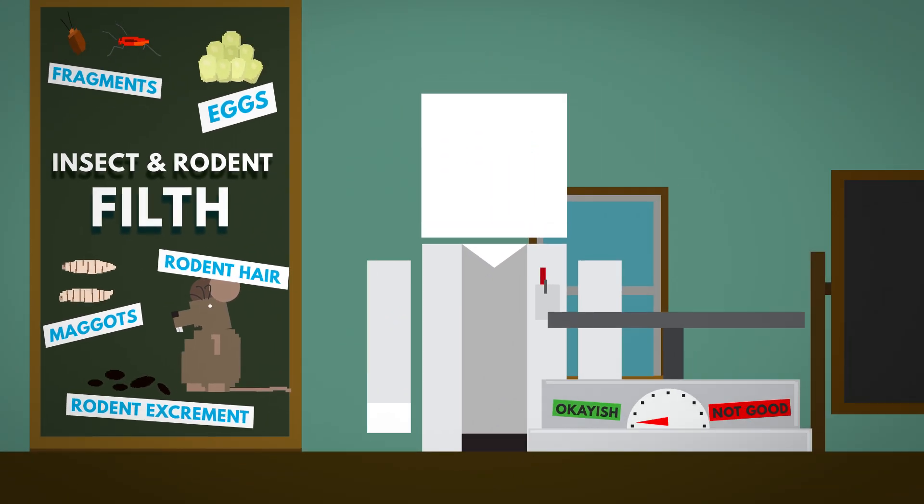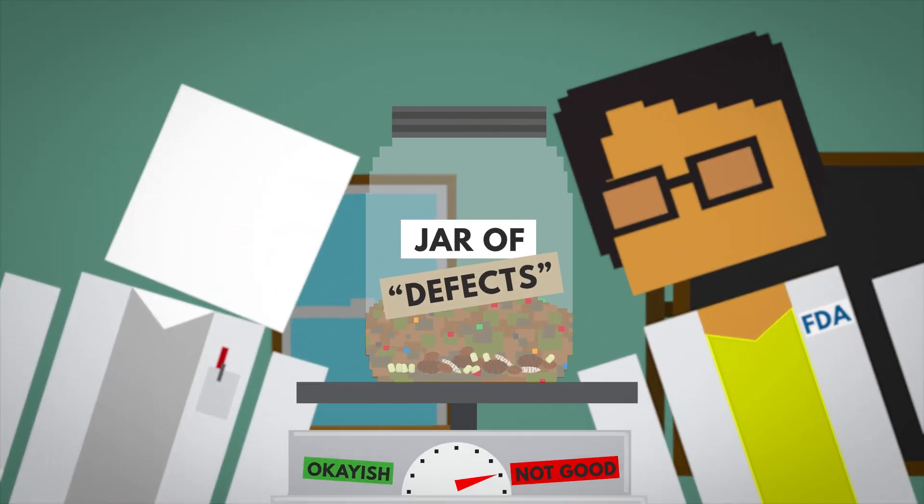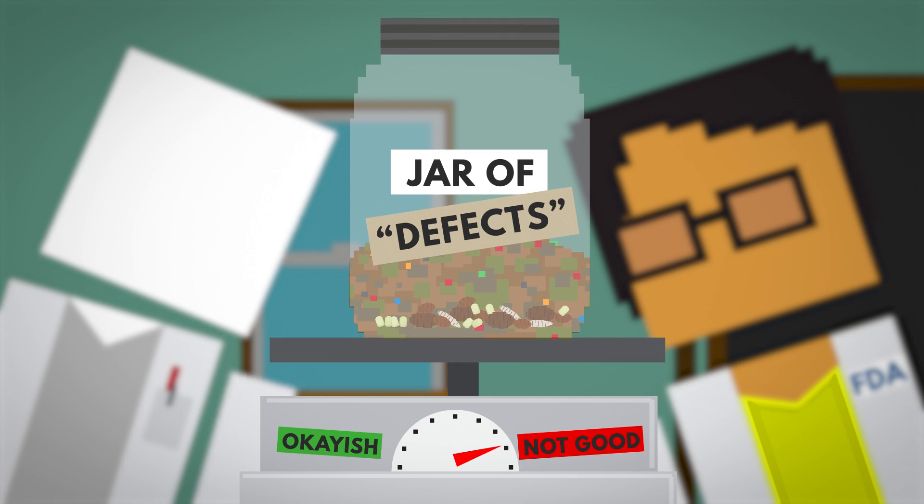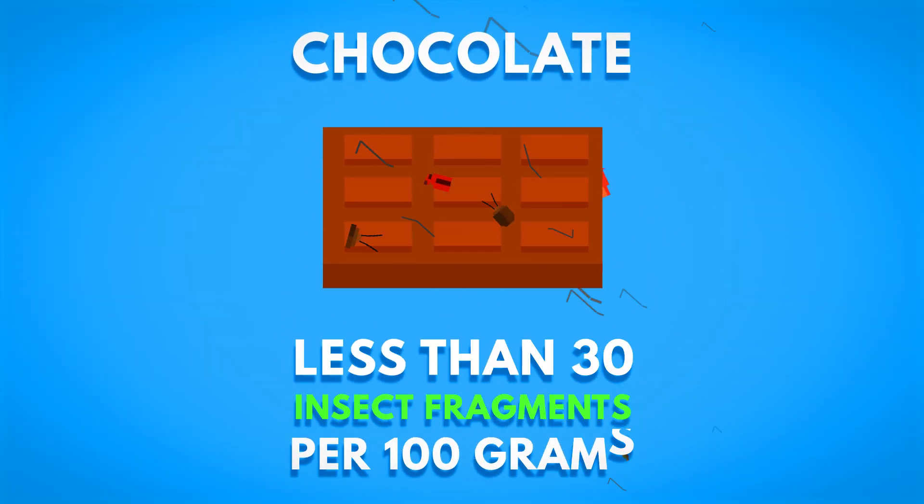It may make you feel slightly better to know that the FDA has set limits to exactly how many defects may be found in each food product. For example, chocolate needs to have less than 30 insect fragments per 100 grams.